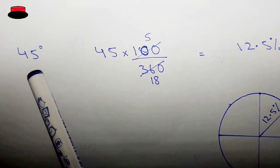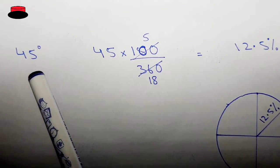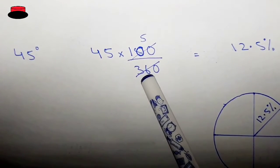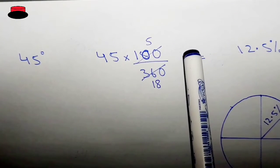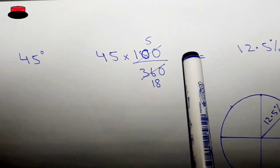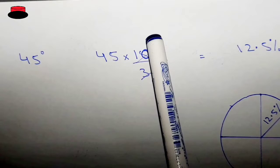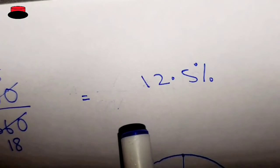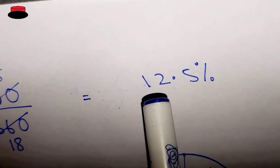This is 45 degrees and we want to convert it into percentage. So 45 into 100 divided by 360. Simplify this: 100 over 360 will be 5 over 18. So 45 into 5 over 18, the answer will be 12.5 percent.